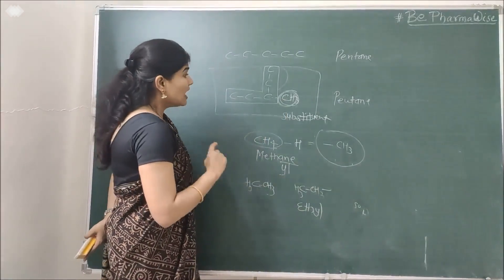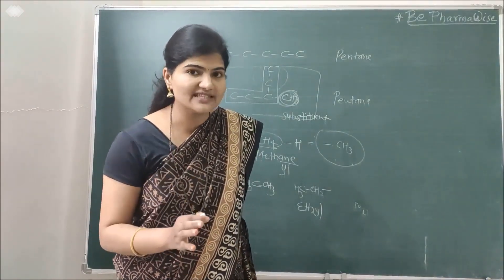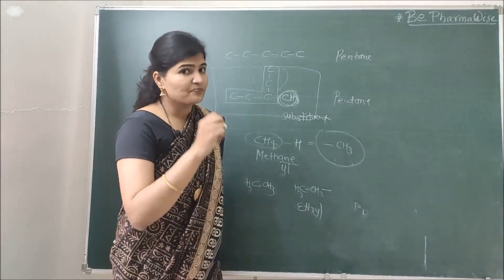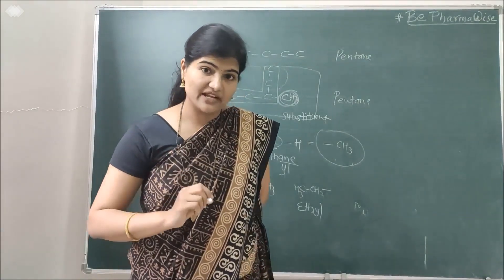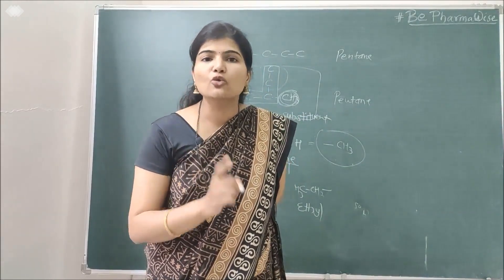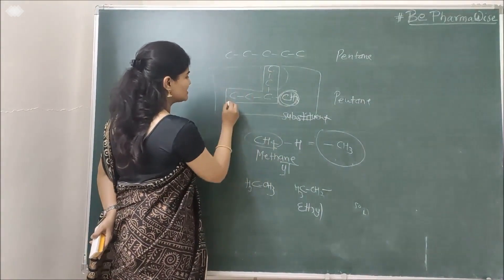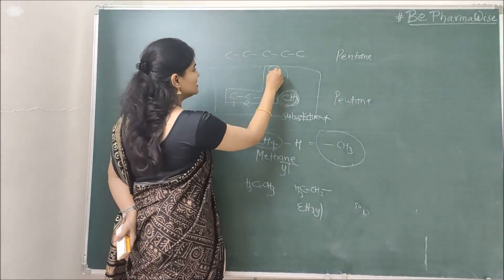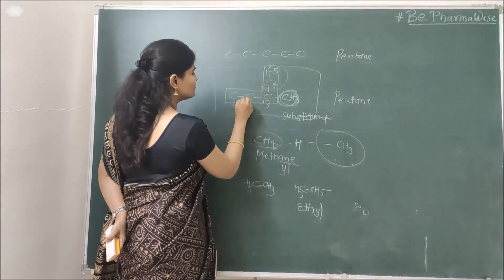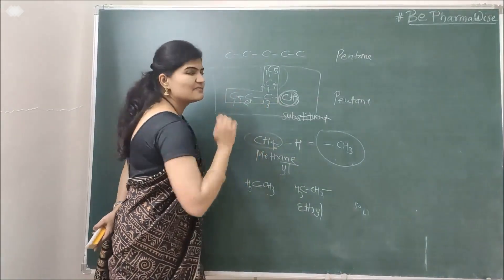The second rule for IUPAC is: whenever substituents are present, you should number the longest chain such that the substituent gets the lowest possible number. For example, in a 5-carbon chain where a substituent sits in the middle, if you number from the left the substituent gets number 3, and if you number from the right it also gets number 3 — so there is no issue in that case.